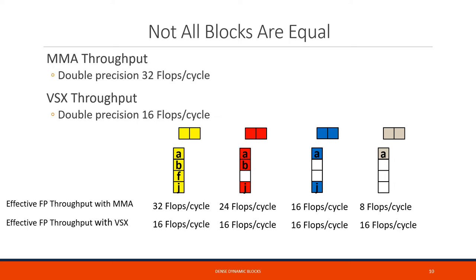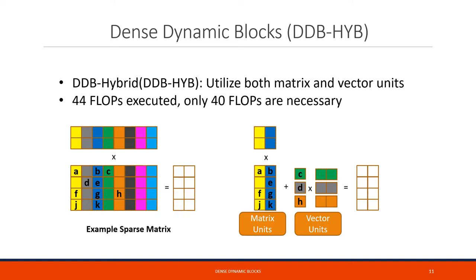On the other hand, in IBM Power 10, the throughput of vector instructions is 16 floating point operations per cycle. With vector instructions, we only need to process the non-zero elements in the blocks. For yellow and red blocks, utilizing MMA units always makes sense because vector instructions cannot achieve the same throughput. With blue blocks, vector and MMA instructions achieve the same throughput. Especially when we have a single non-zero in a block, the effective throughput of 8 floating point operations per cycle is lower than what we can achieve with vector instructions. Therefore, we propose a more flexible version of DDB, DDB hybrid, that can utilize vector units when needed.